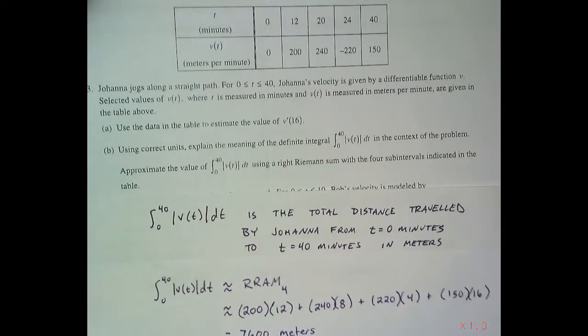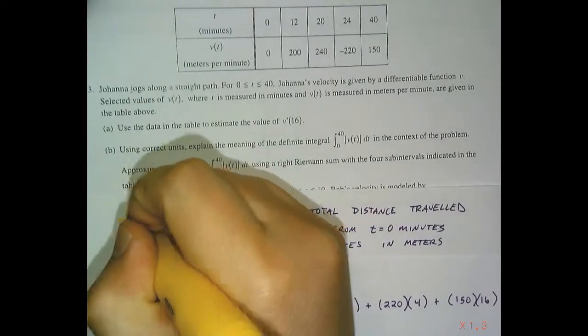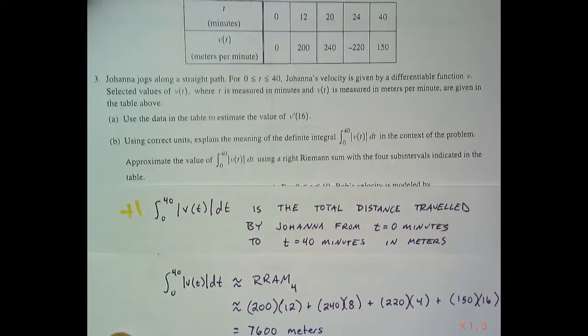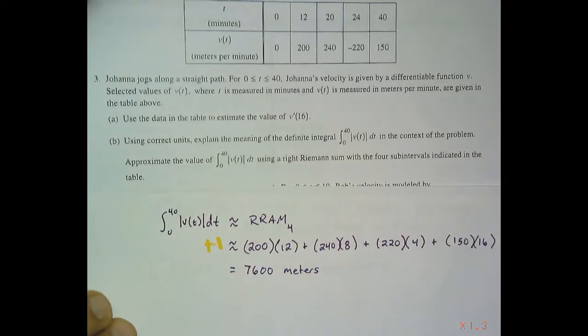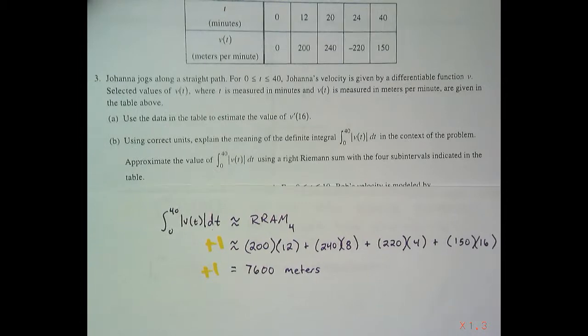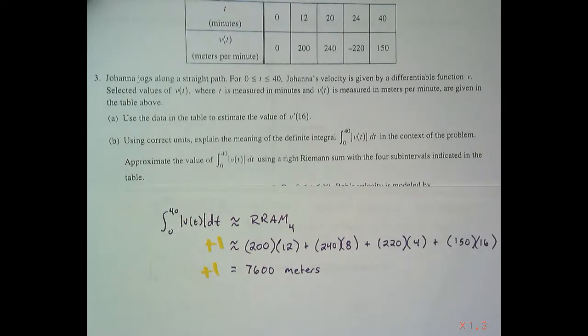So then the points for this: You get one point if you had the explanation correct. You get one point if you did the right Riemann sum. And then one point if you have the correct final answer. On to part C.